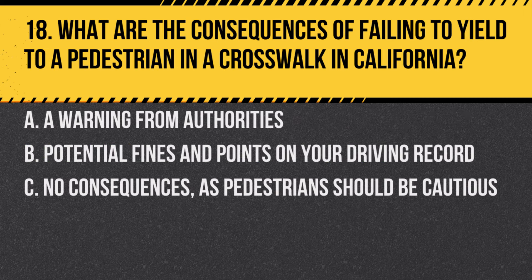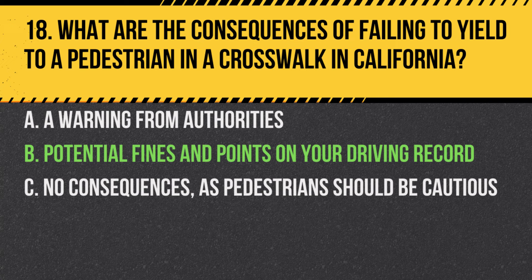Question 18. What are the consequences of failing to yield to a pedestrian in a crosswalk in California? A. A warning from authorities. B. Potential fines and points on your driving record. C. No consequences, as pedestrians should be cautious. Answer: B. Potential fines and points on your driving record. Failure to yield can lead to legal penalties.